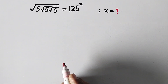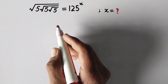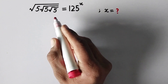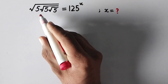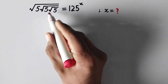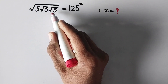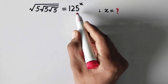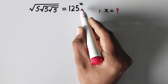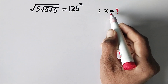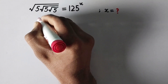Hello everyone and welcome to Explore Maths. Today we are going to solve a very nice Olympiad math problem: the square root of 5 times the square root of 5 times the square root of 5 is equal to 125 raised to the power x, and we have to find the value of x. Let us see the solution.